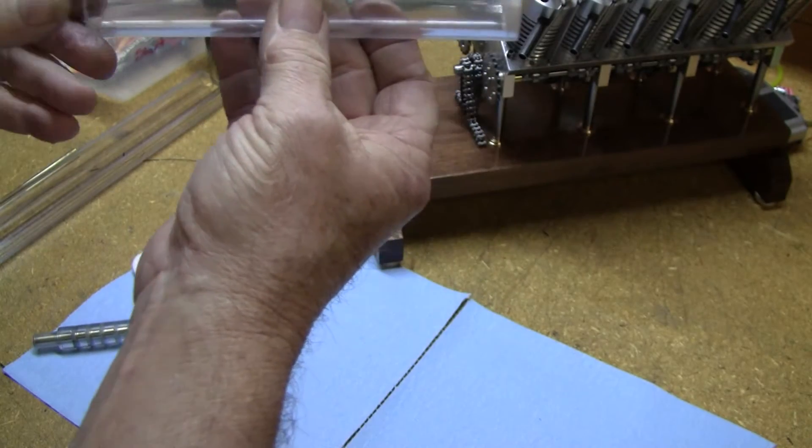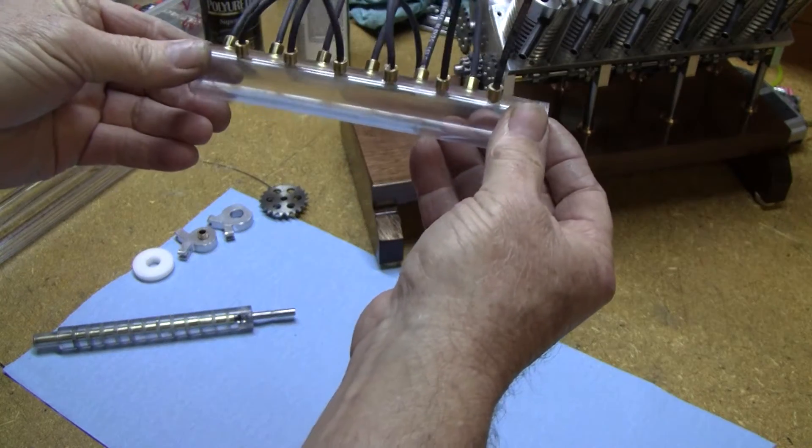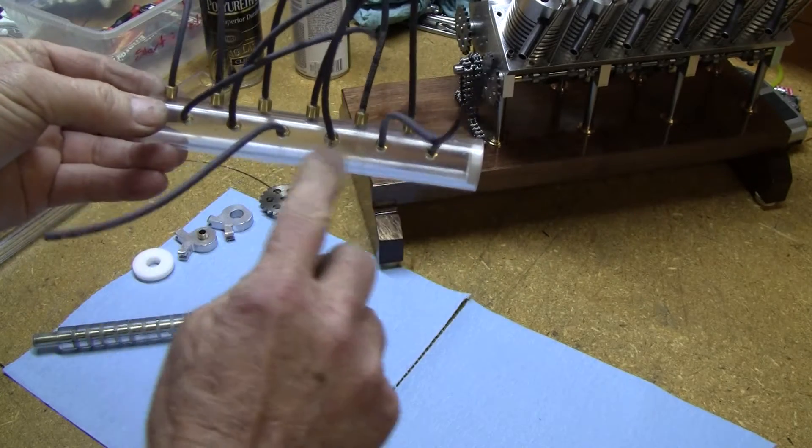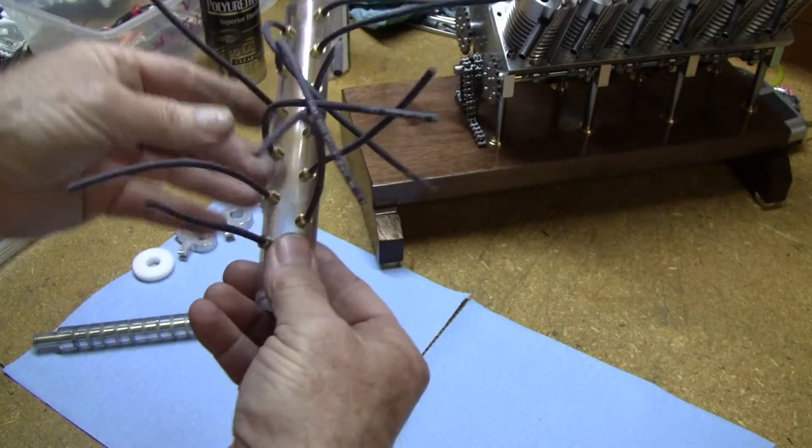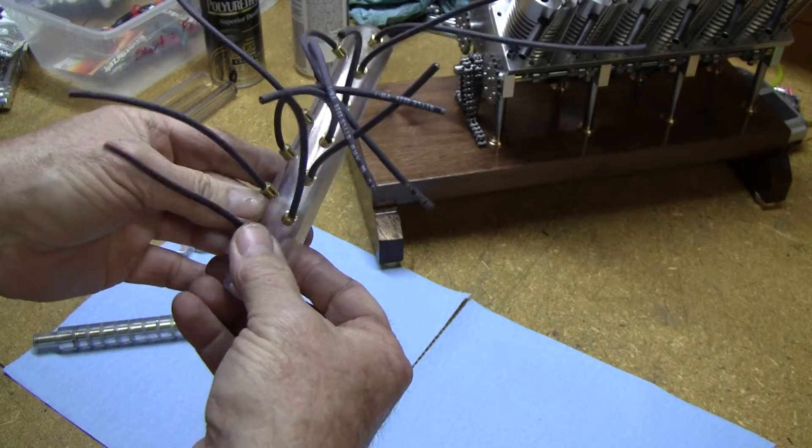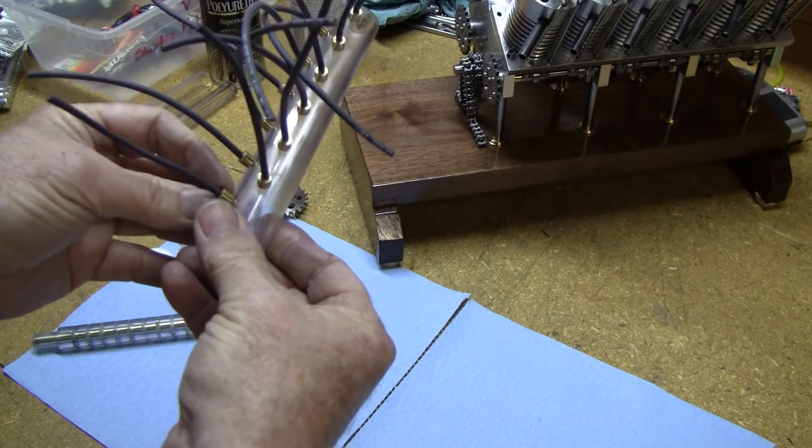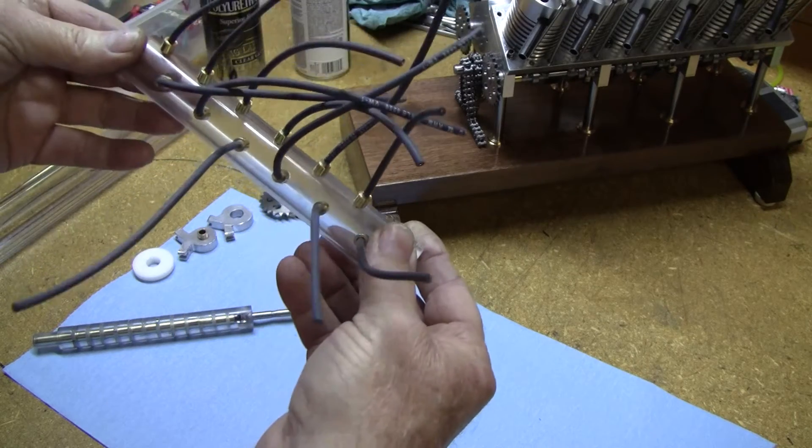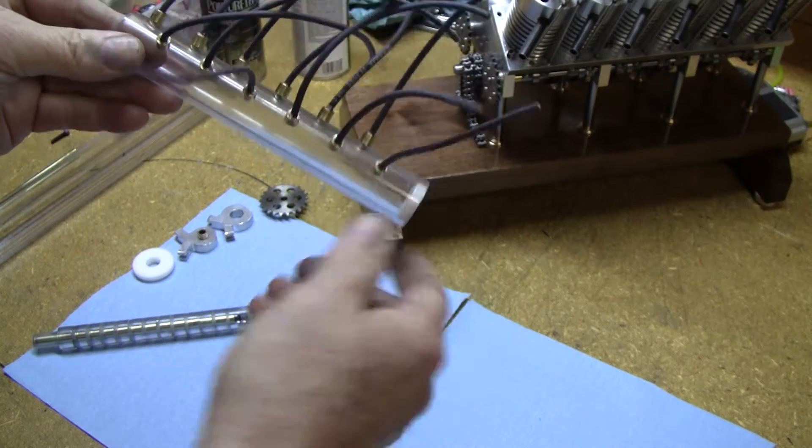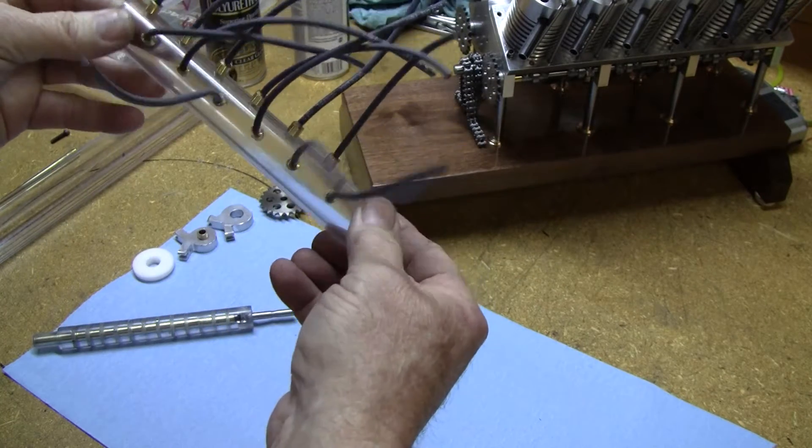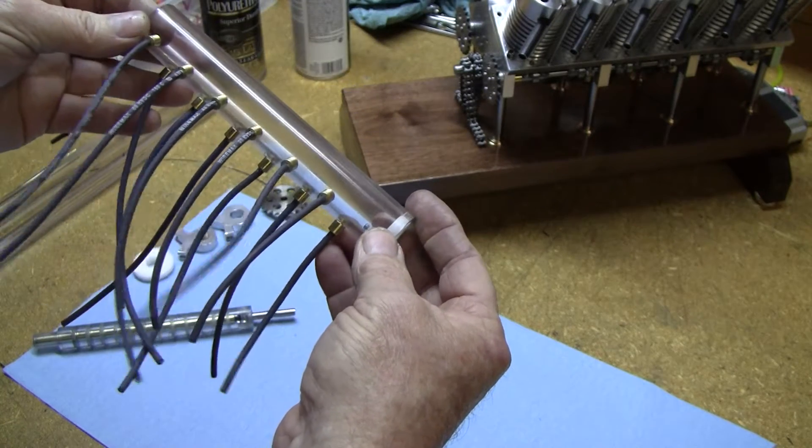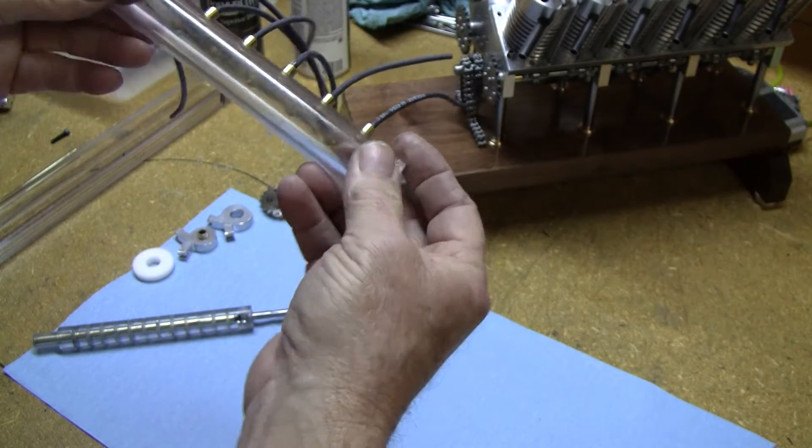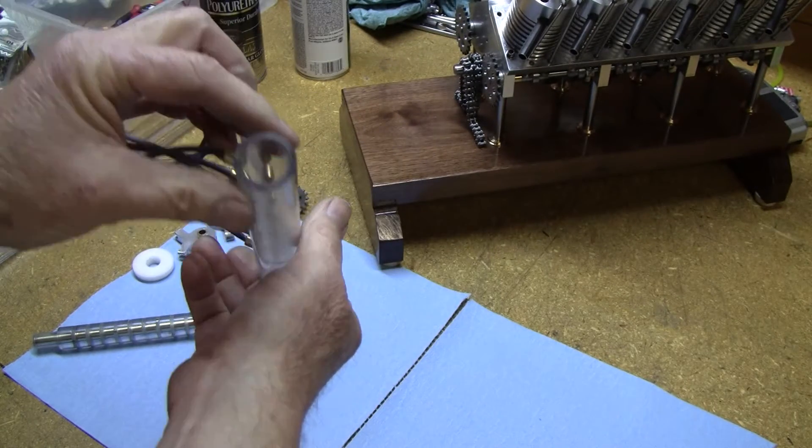This is the stationary part of the distributor and it has 12 pickups on it, one for each spark plug. I made these out of brass and threaded them 256, drilled the holes in the polycarbonate, threaded those and screwed these brass pickups just so they're flush with the inside of the tube.